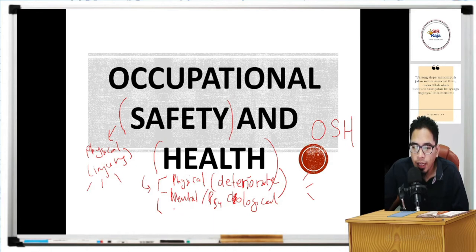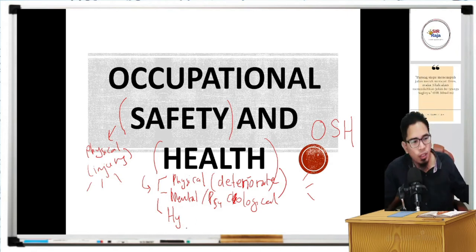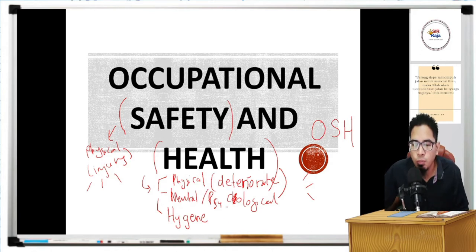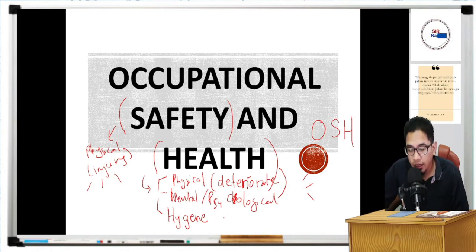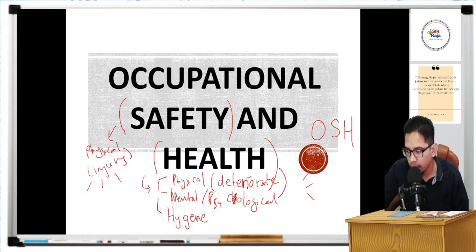There is another aspect that, while related to physical and mental health, is separated because it has different criteria - and that is hygiene. Hygiene is more about cleanliness. For example, imagine a classroom where animals can come and go freely - cat droppings in the corner, bird droppings on chairs and tables - and you are forced to work in that condition.